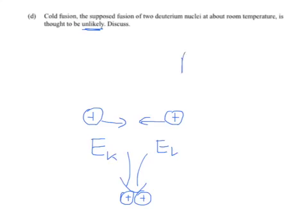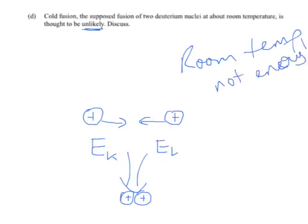So at room temp, there's simply not enough energy, enough kinetic energy, because remember kinetic energy is temperature. The higher the temperature, the more kinetic energy the particles move around faster.